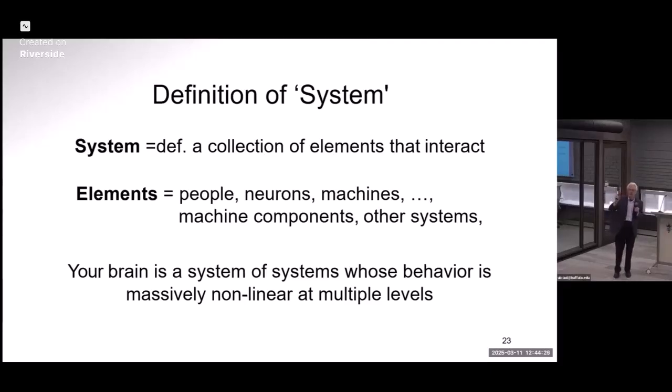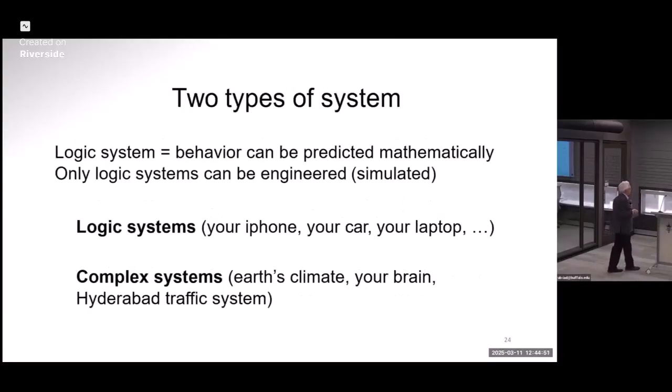The previous talk shows how hard it is to do mathematics of complex systems. You can't make predictions about complex systems in the way that you can about simple systems. The brain, our human brain, is the most complex system that we know of, orders of magnitude more complex than, for instance, the climate or the Hyderabad traffic system.